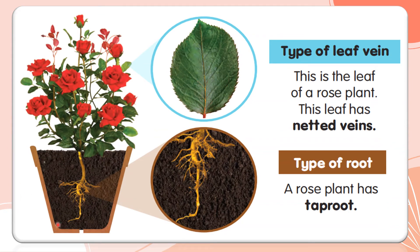This is a picture of a rose plant. Let us look at the type of leaf vein and the type of root. The leaf of a rose plant has netted veins. For the type of root, a rose plant has a tap root.